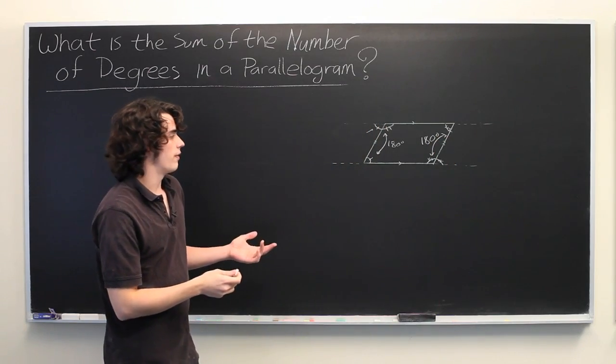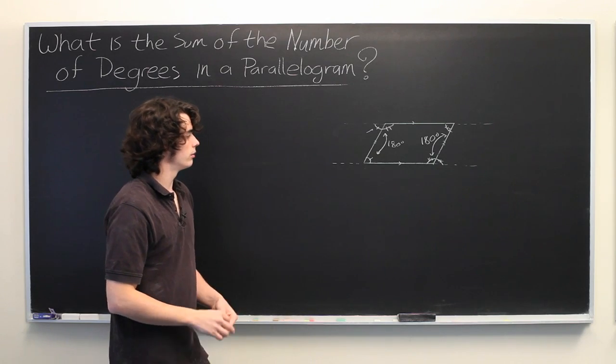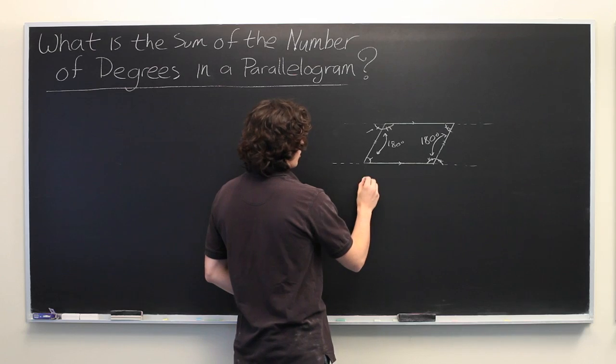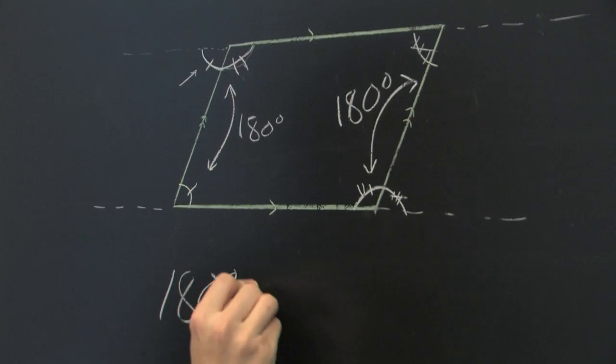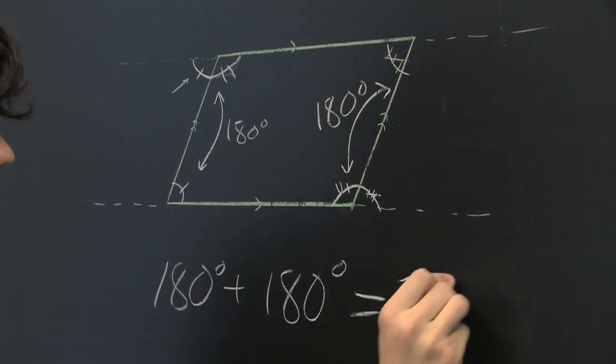And in fact, we hardly even need to use the fact that this is a parallelogram. This theorem is true for any quadrilateral. Since these two are equal to 180 degrees, and these two are equal to 180 degrees, we can simply add them together to get 360 degrees.